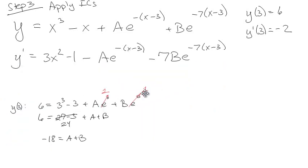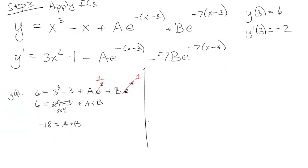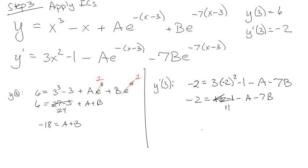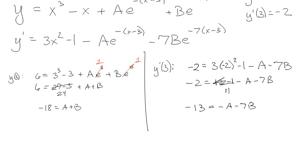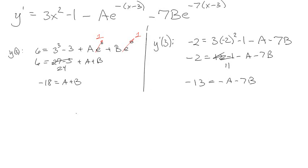And I'm going to apply my prime one. So I know y'(3) equals negative 2. So I've got negative 2 equals 3 times 3² - 1 - a, and again e^0, which is 1, minus 7b. So 3 times 4 is 12, and that's 11. If I subtract that from both sides, I get minus 13 equals minus a minus 7b.